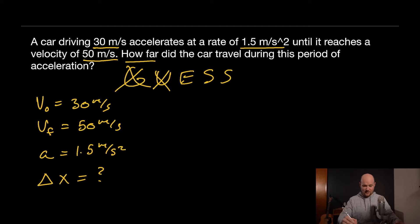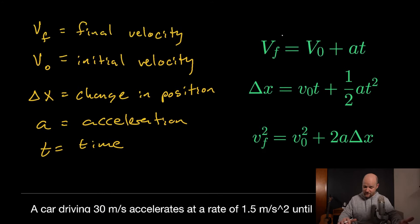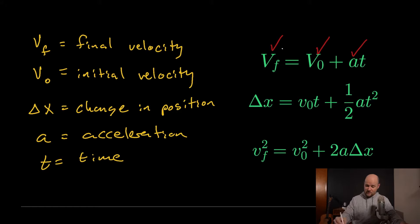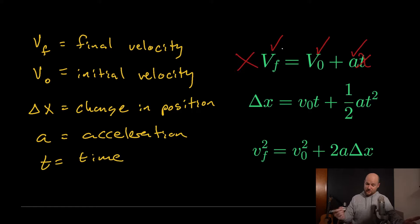Now we need an Equation containing v₀, vf, acceleration, and Δx. Looking at the first kinematic equation, it has vf, v₀, and acceleration — but it also requires time, which we don't have and aren't solving for. So that equation is out. The second equation has Δx and initial velocity, but again requires time and is also missing final velocity — so that's out too.